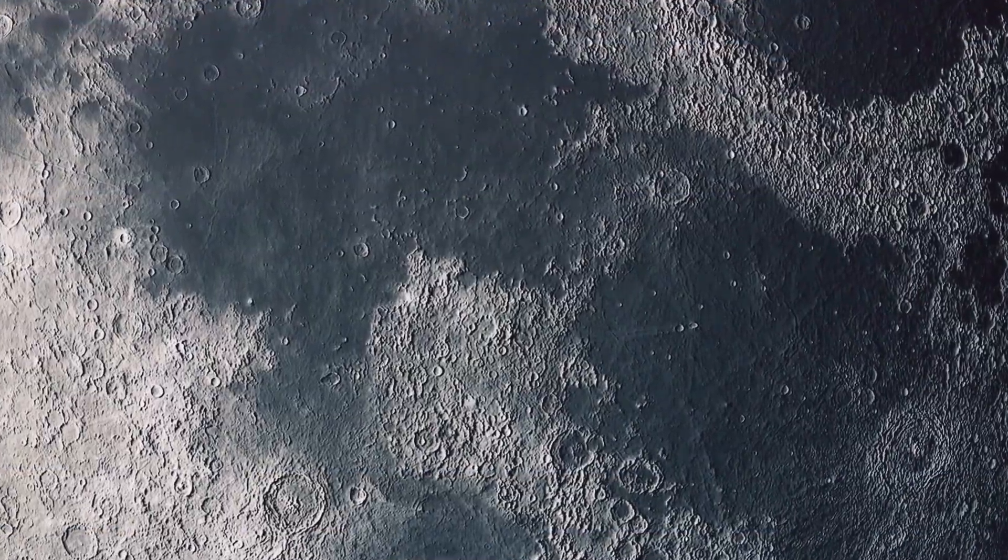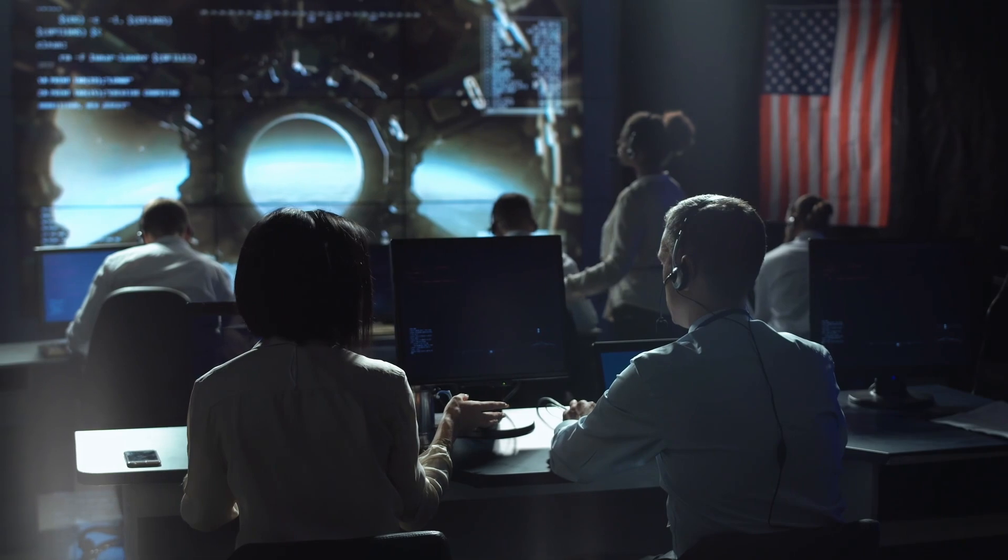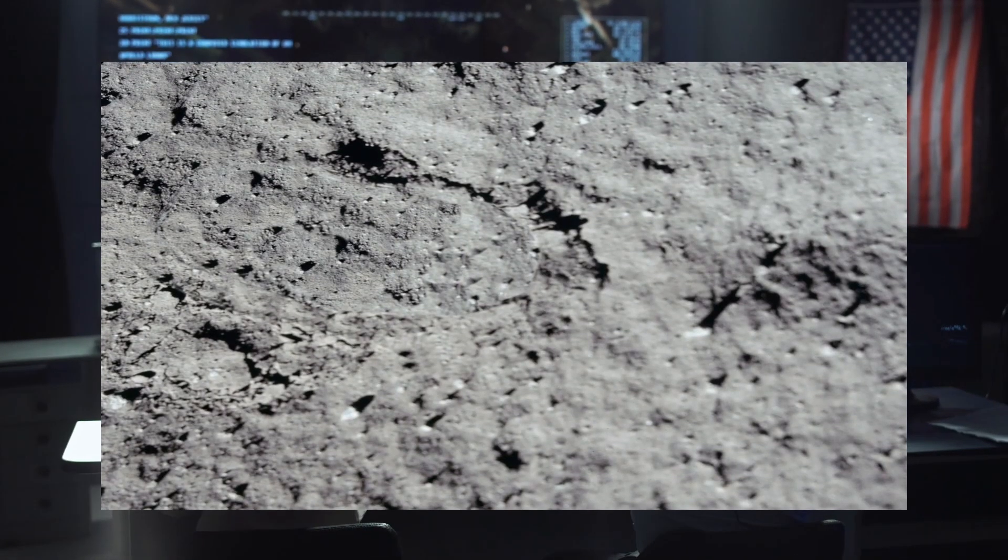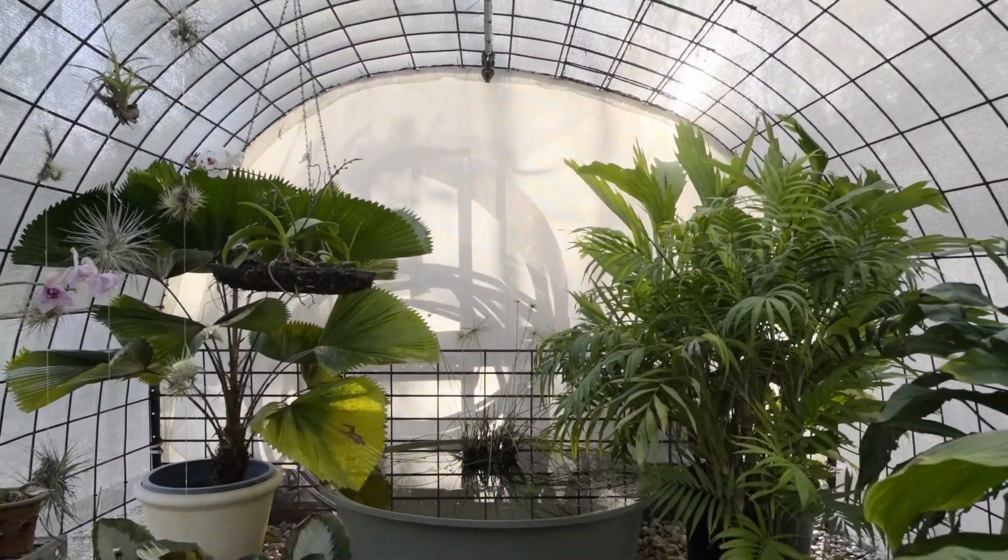Nonetheless, beneath its inhospitable exterior, the Moon may contain hidden wonders. Missions by the Lunar Prospector and the Clementine Probe suggested potential reserves of water amassed beneath layers of dust and ice. This water supply could aid human sanitation, food production, and even the production of breathable oxygen.